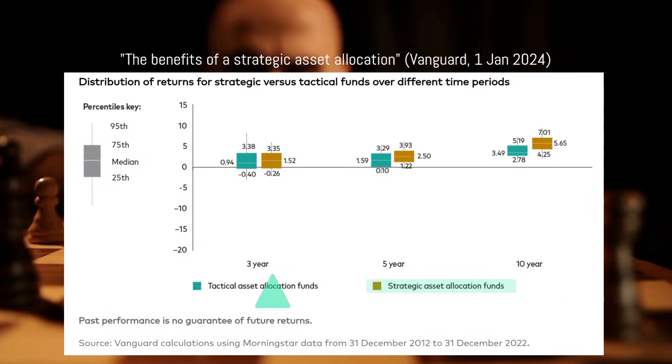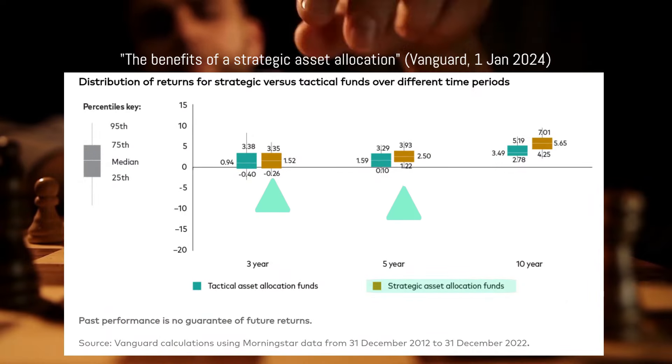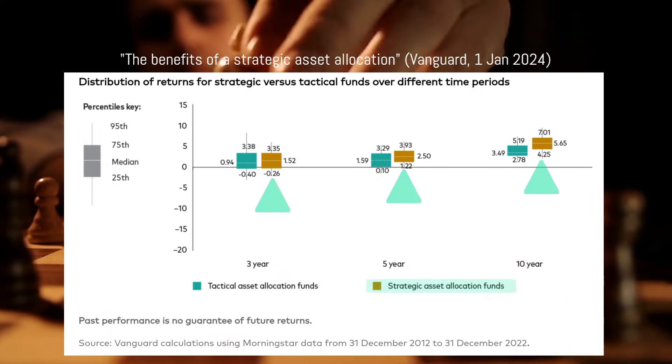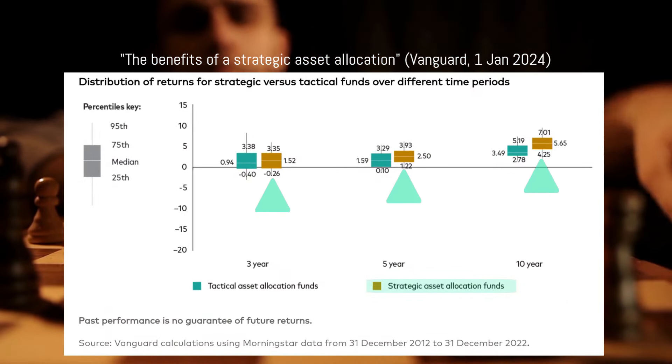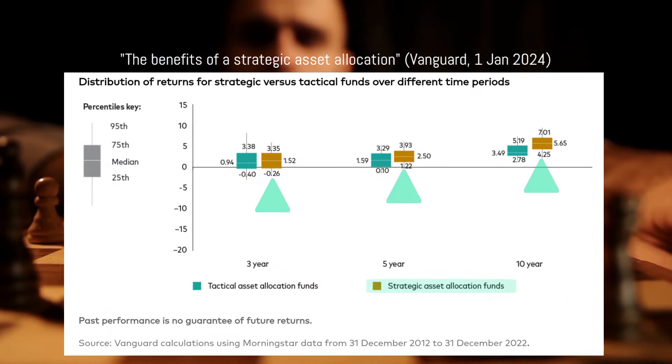Not surprisingly, financial experts such as Vanguard and Morningstar generally recommend a strategic allocation.